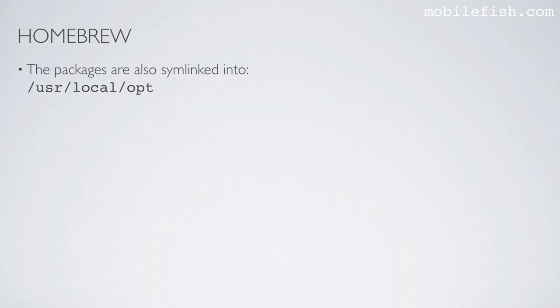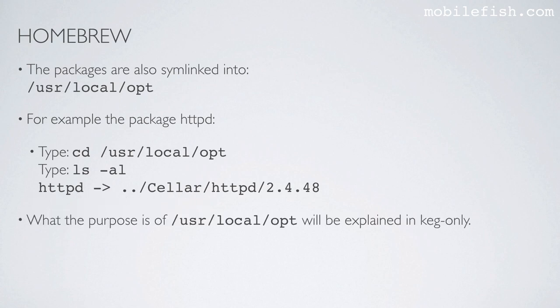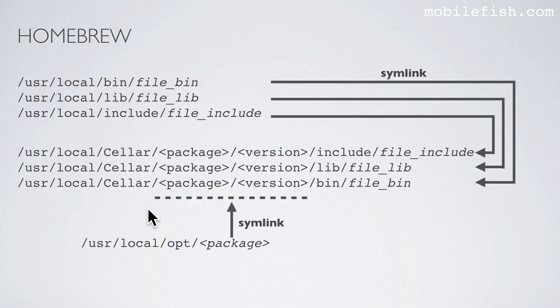The packages are also symlinked into this path. For example, the package httpd — in this path, this symbolic link is created. The purpose of /usr/local/opt will be explained in a cask-only context. When you install a package with Homebrew, the package will be installed in these paths, but only if it is needed.